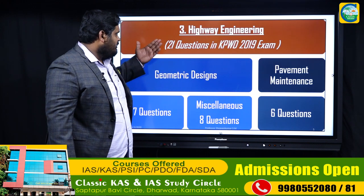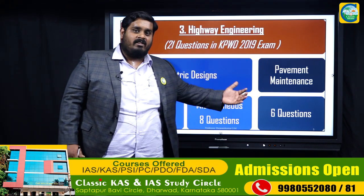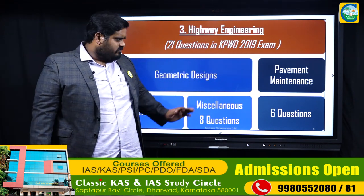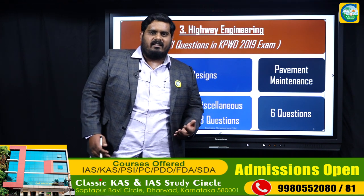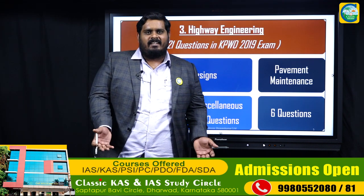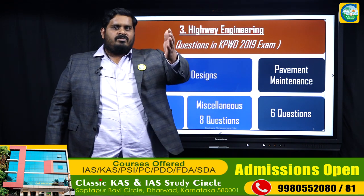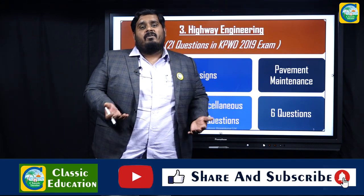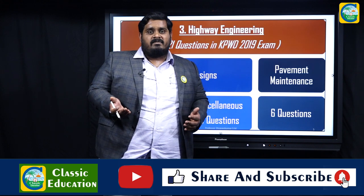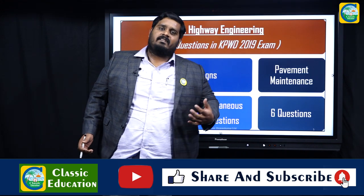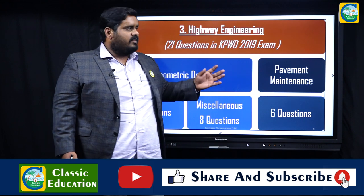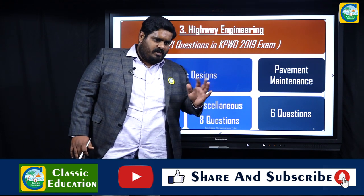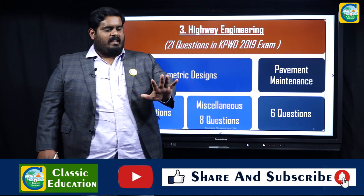In public health engineering: water supply accounts for about 13 questions and sanitation engineering for about 8 questions. Highway engineering contributes around 21 questions. That is why I give a concise breakdown — for this exam, it is not necessary to prepare all subjects. Choose your best subject, the one where you performed well, and work on it first.